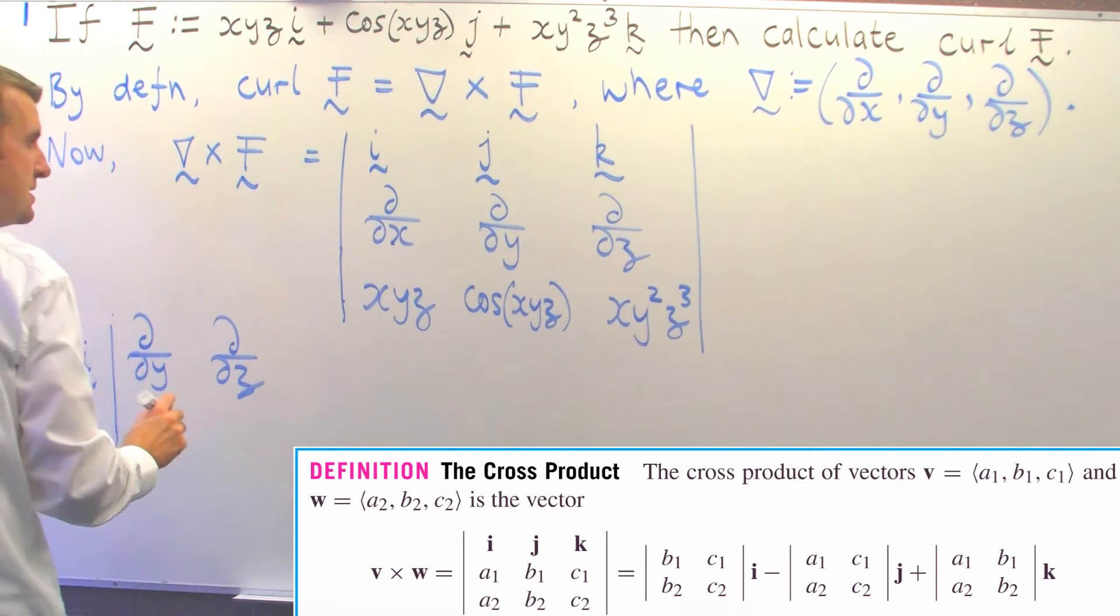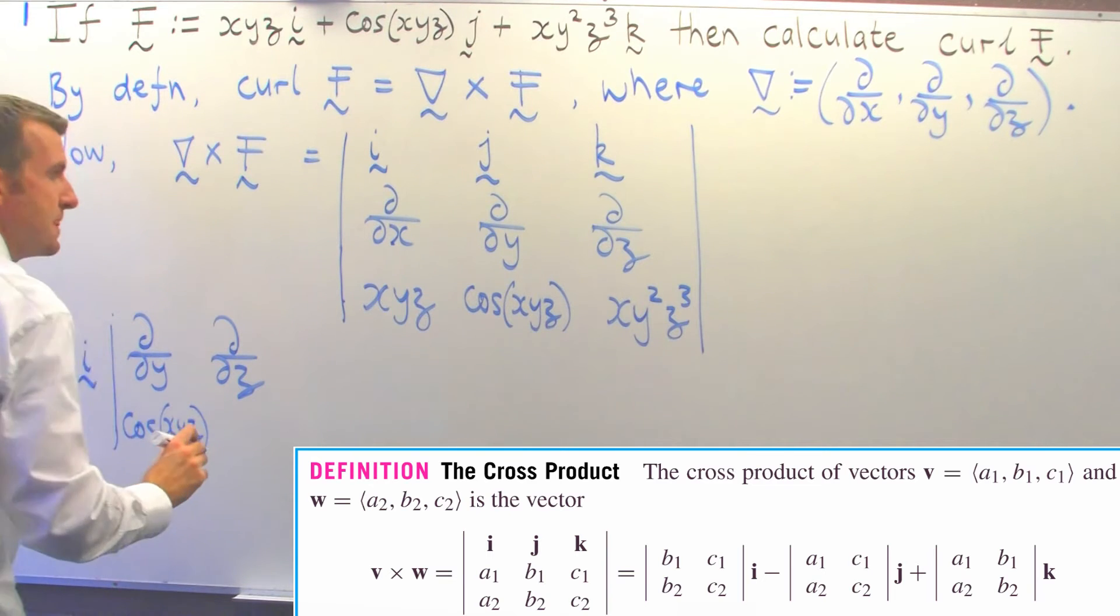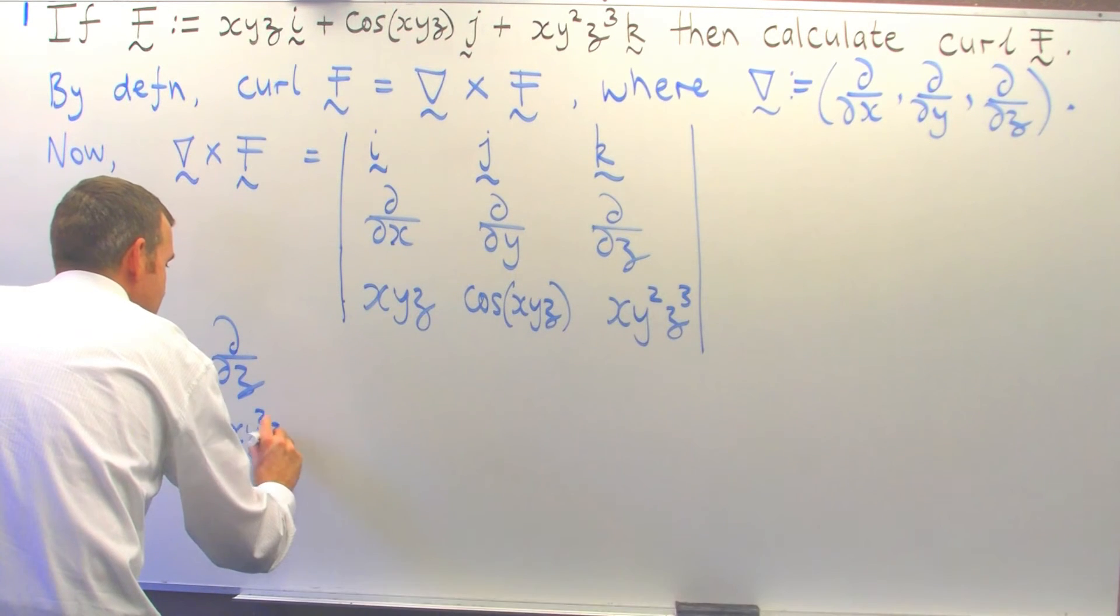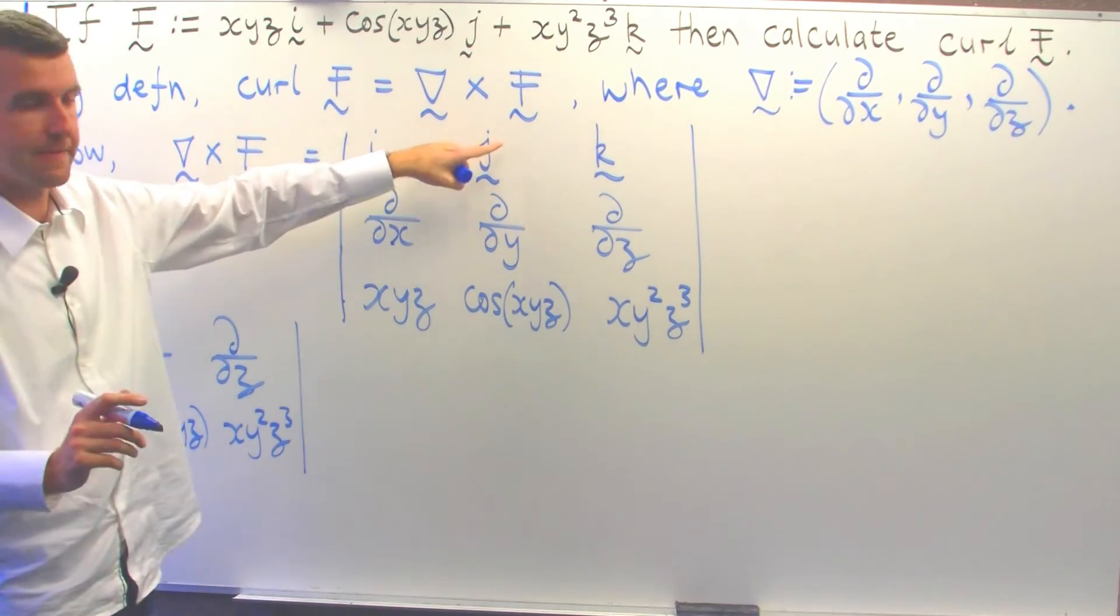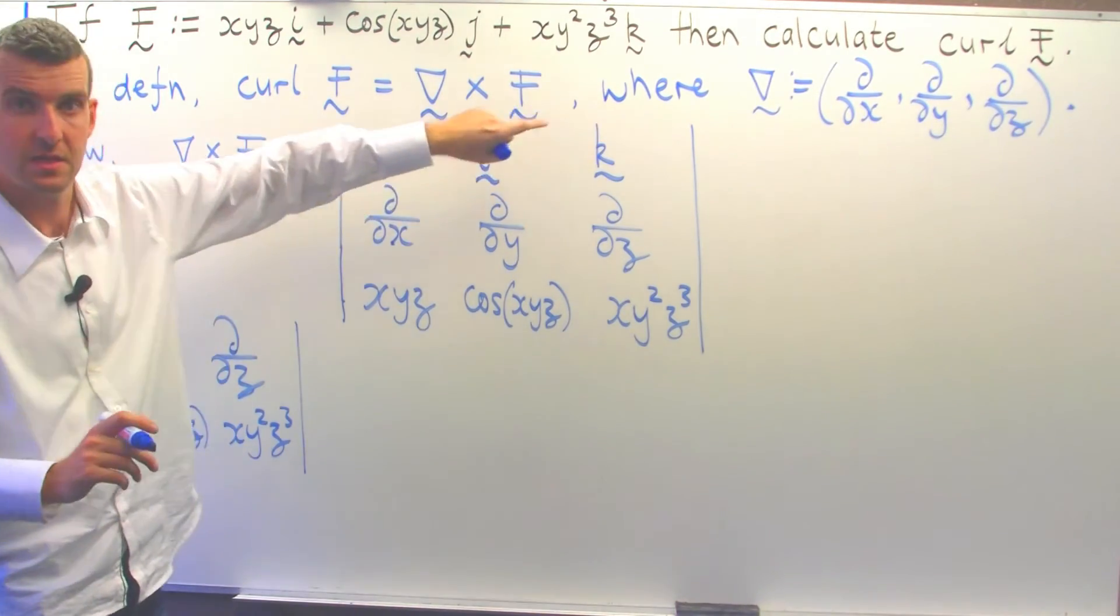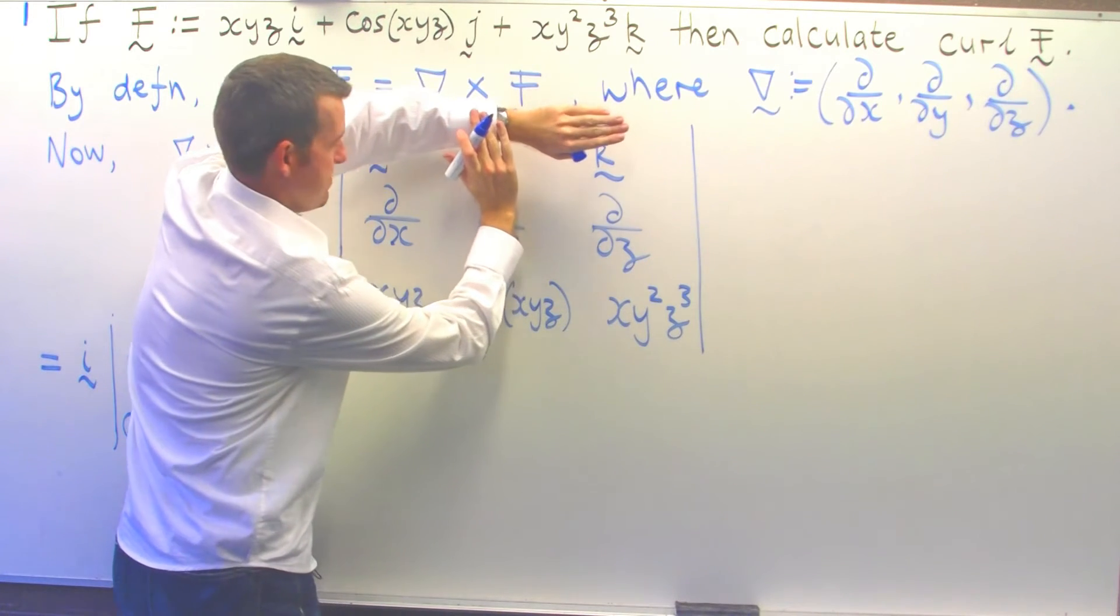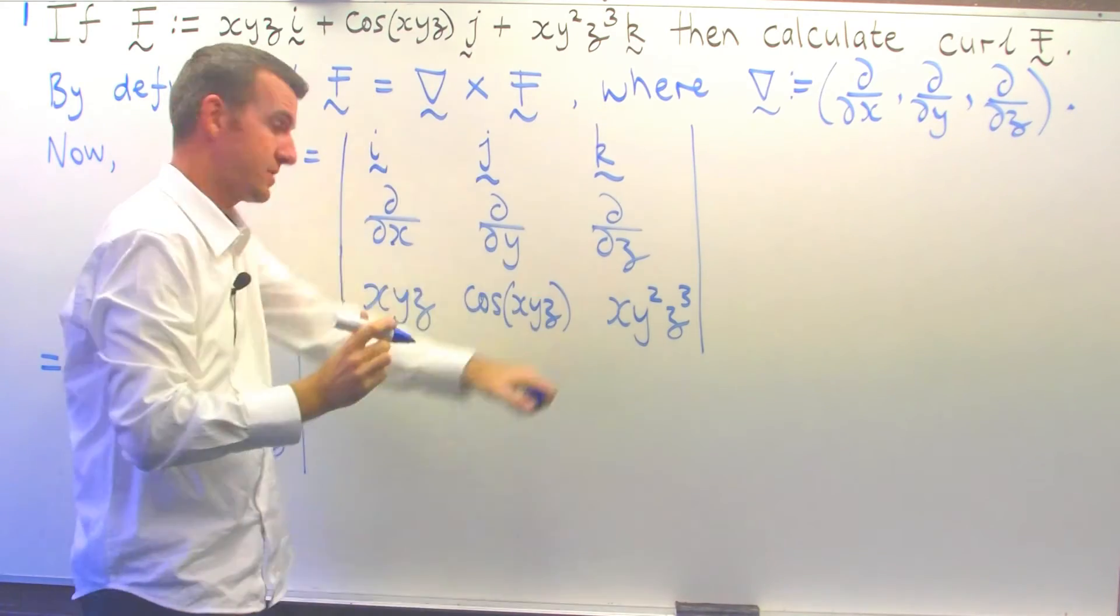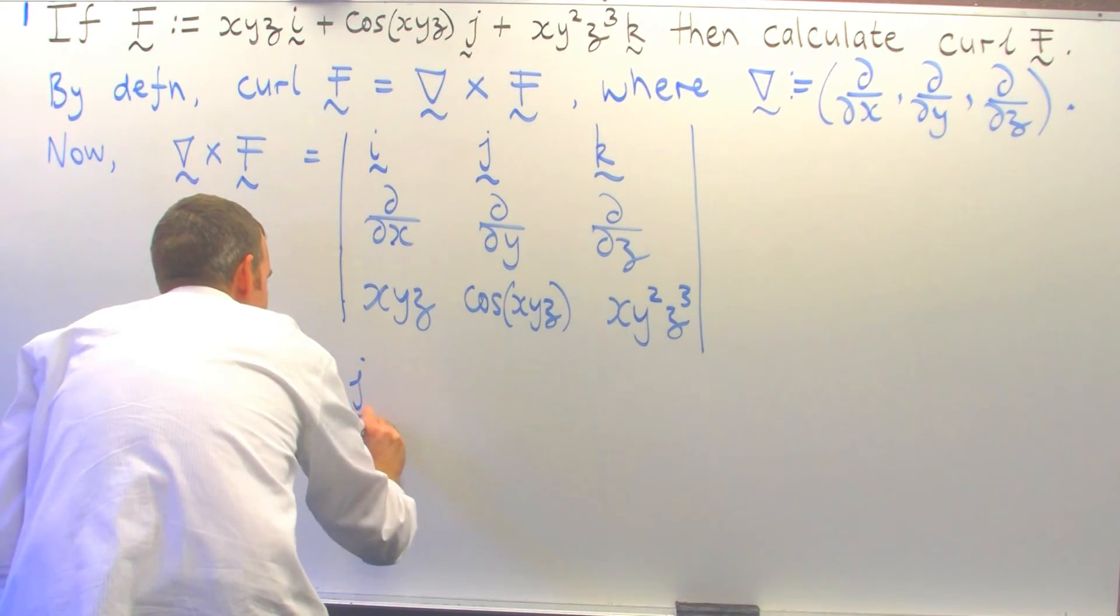That's cos(xyz) and xy²z³. Now I move over to j. j is in the top row and the center column, so I cover those up and multiply j by the determinant of what's left. Now don't forget, a minus sign needs to go in front of this j here. A lot of people forget the minus sign.